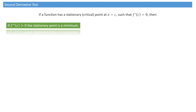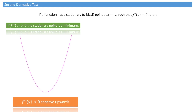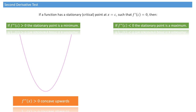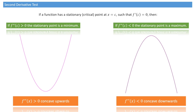The reason for this is that if the second derivative is positive, it means the curve is concave upwards, so the stationary point must be a minimum. Similarly, if the second derivative at c is negative, then the stationary point is a maximum, because the curve must be concave downwards, and the critical point must therefore be a maximum.